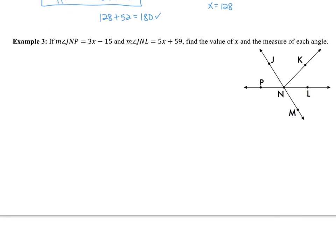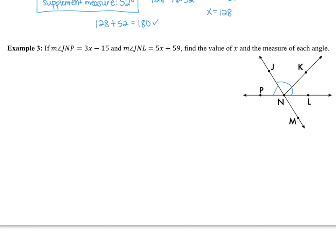The last example: if the measure of angle JNP is 3x minus 15 and the measure of angle JNL is 5x plus 59, find the value of x and the measure of each angle. For this problem, use the picture. We can see these two angles — angle JNP and angle JNL — form a linear pair. So in a proof you would state that first, and then because they form a linear pair, the measure of angle JNP plus the measure of angle JNL must equal 180.